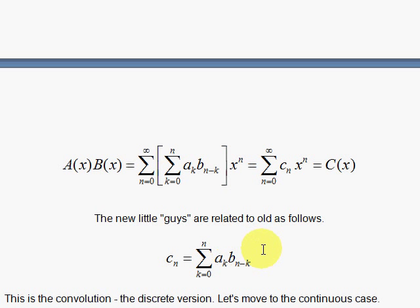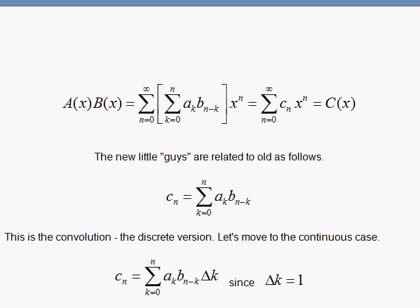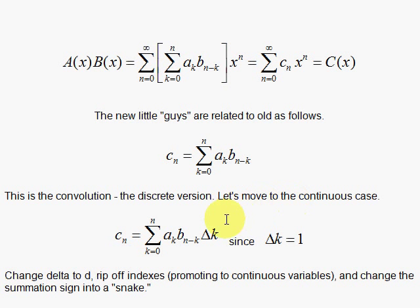That is the analog in the discrete form of our continuous convolution. Notice we have a K here and an n minus K. And let's go ahead and make this a continuous case by promoting the discrete variables to continuous variables. We do that by inserting here delta K. Because delta K is 1. K goes from 0 to n.